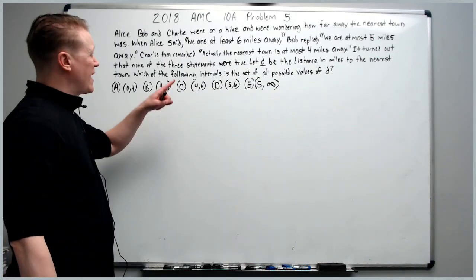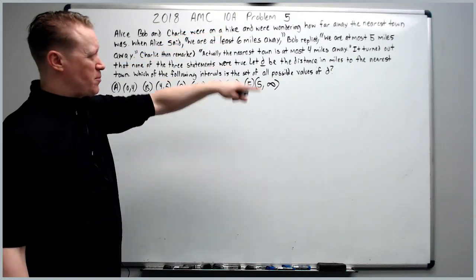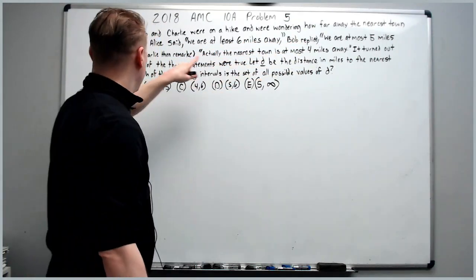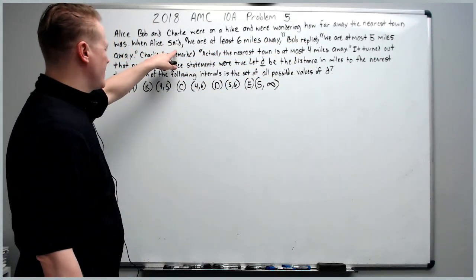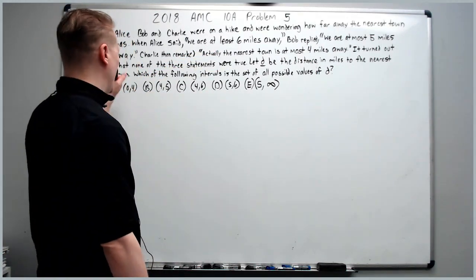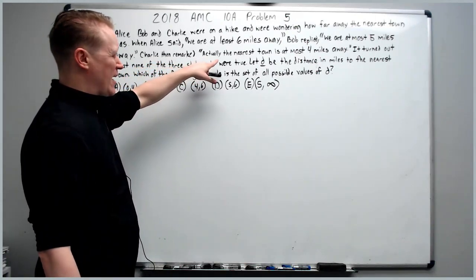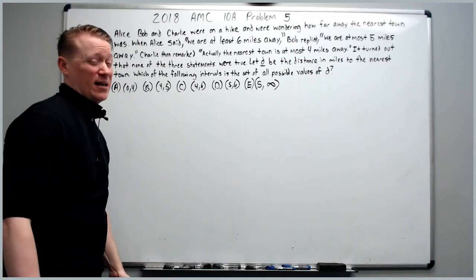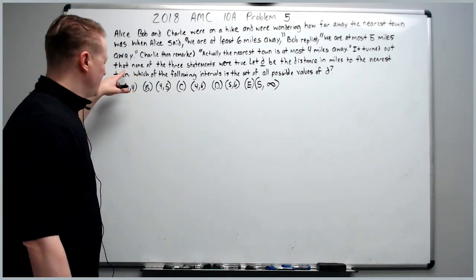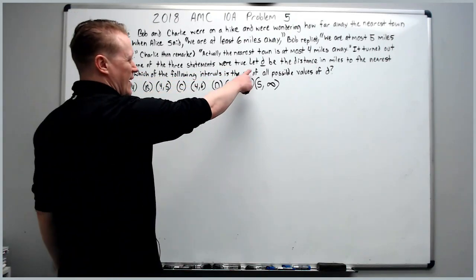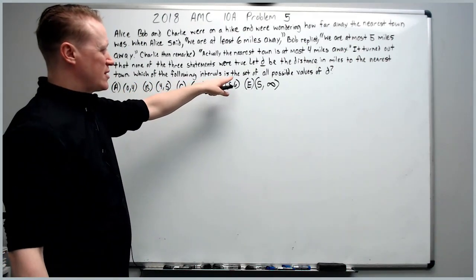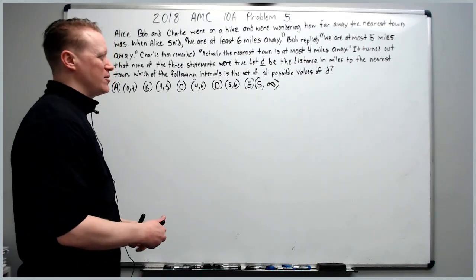And the last problem of the set, the 2018 AMC 10A problem 5. A, B, and C were on a hike and were wondering how far away the nearest town was when A said, we are at least 6 miles away. Bob replied, we are at most 5 miles away. C then remarked, actually, the nearest town is at most 4 miles away. It turned out that they're all filthy liars, that none of the three statements were true. Let D be the distance in miles to the nearest town, which of the following intervals is the set of all possible values of D.